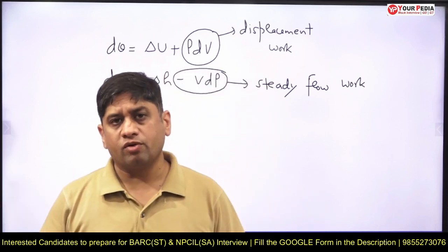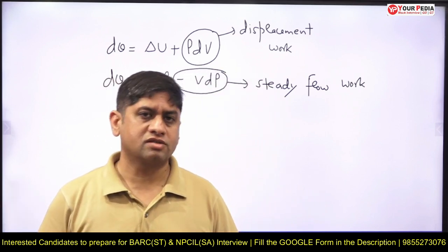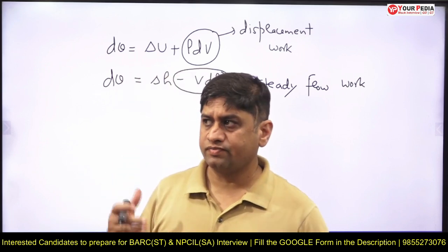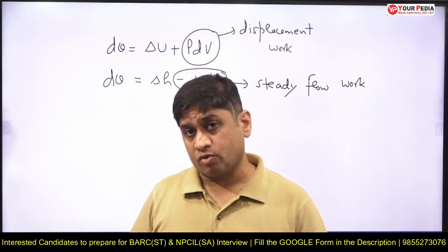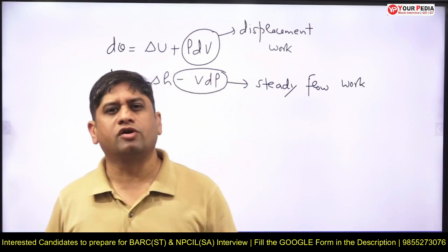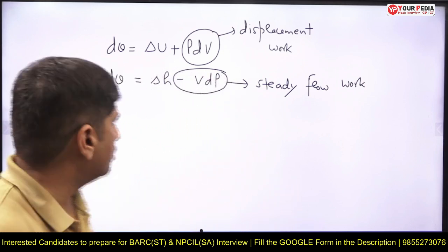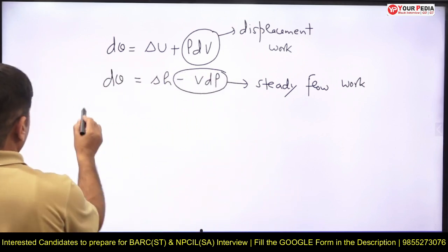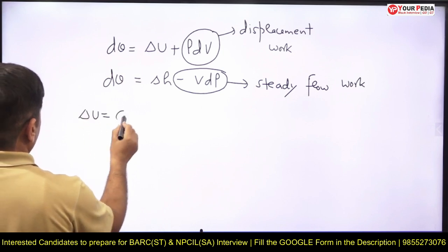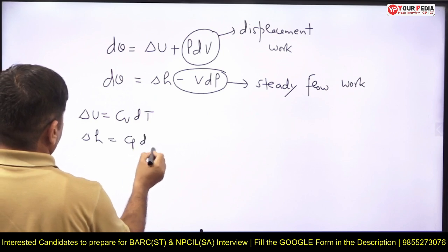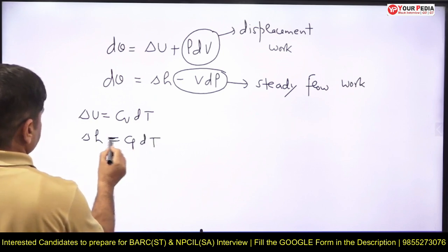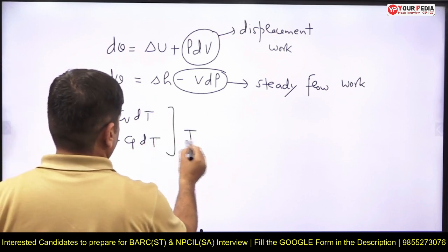There are different kinds of reversible processes: isothermal process, isobaric process, isochoric process, and adiabatic process. And then, delta U equals Cv dT and delta H equals Cp dT. As we know, for ideal gases, internal energy change and enthalpy change are thermodynamic properties.